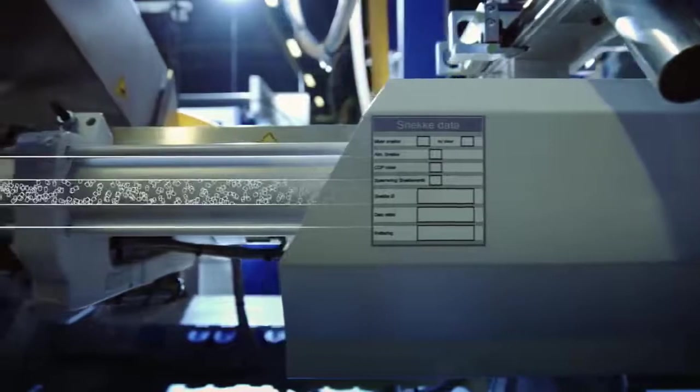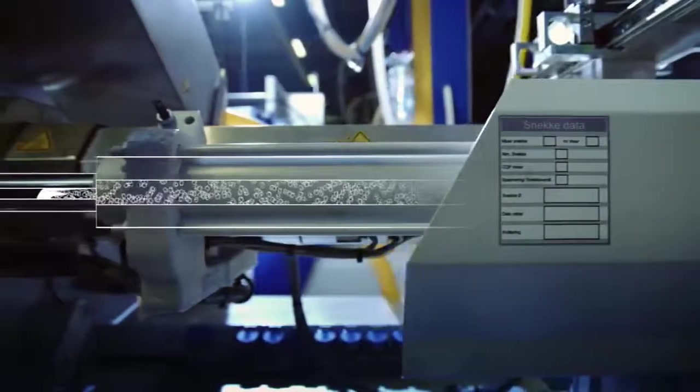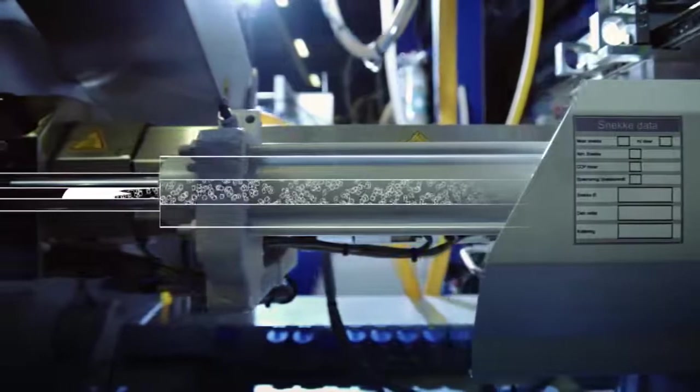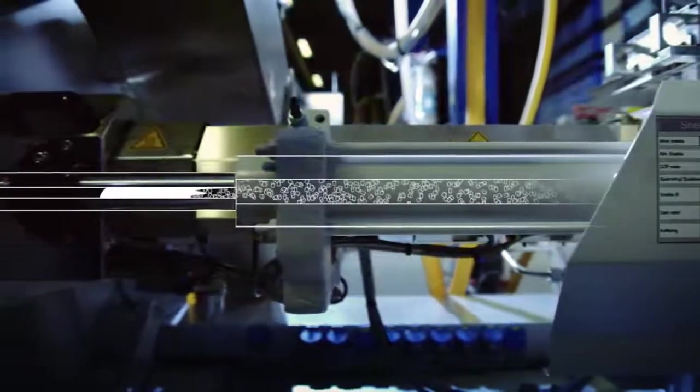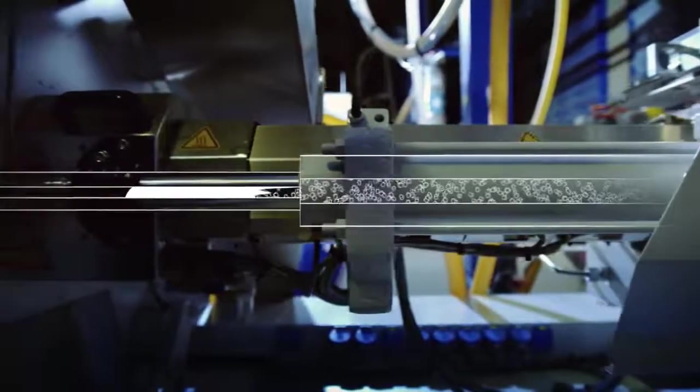The coloured granulate is then led into the moulding machine. Within no time, the granulate is heated to between 230 and 310 degrees Celsius. The plastic melts into a texture much like toothpaste.